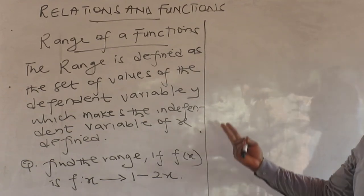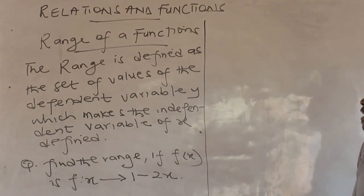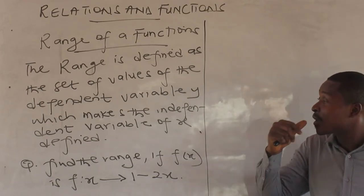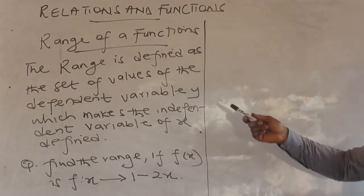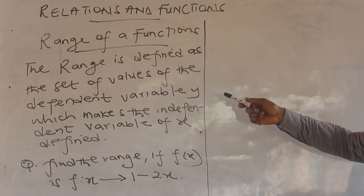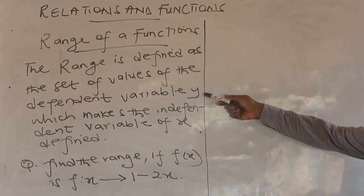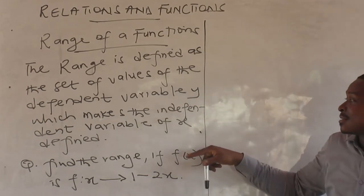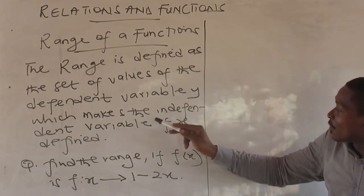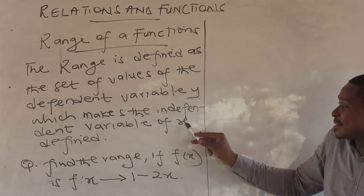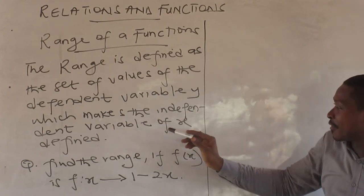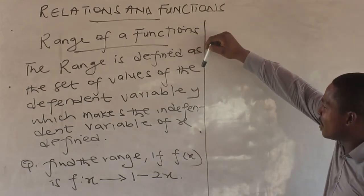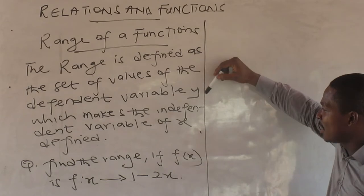Let's continue with our relations and functions. We are on range of a function. The range is defined as a set of values of the dependent variable y. Dependent variable meaning y depends on x, which is the independent variable — x does not depend on y.